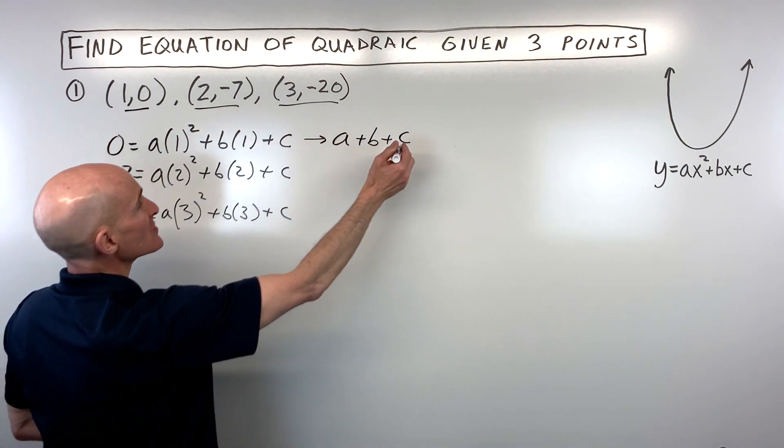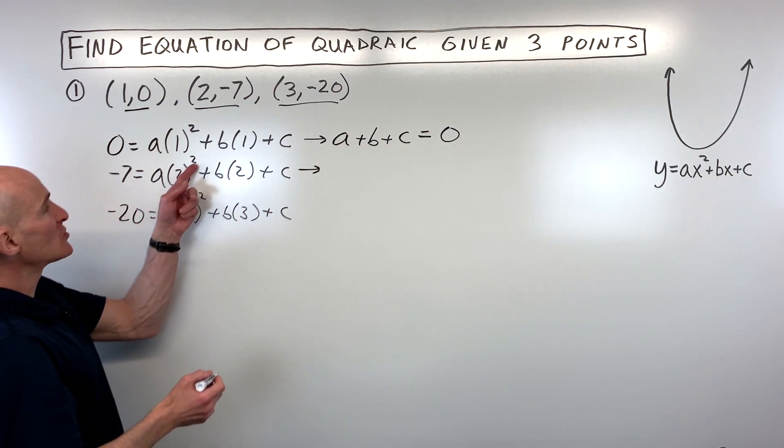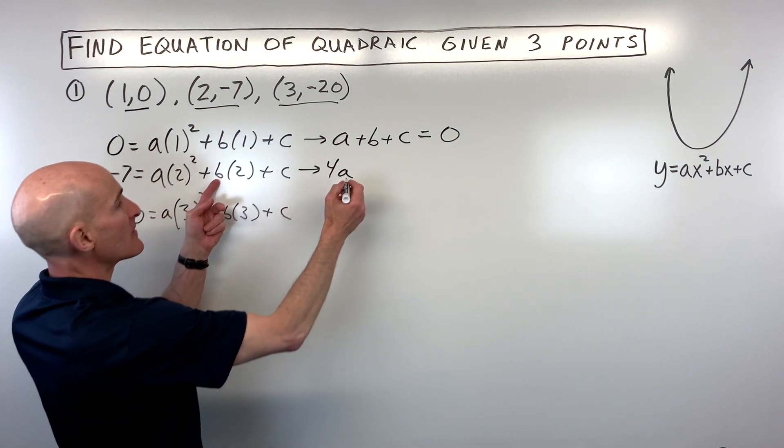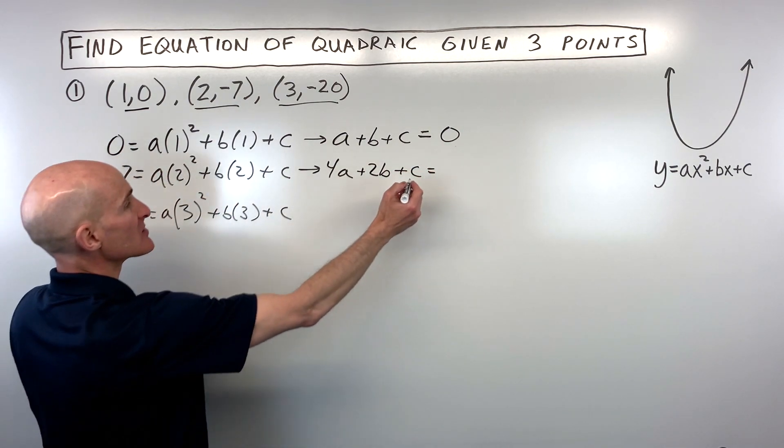And I'm just going to flip this equation. So this is all equal to zero. Now same thing with the second equation. Two squared is four times a is going to give us 4a. Two times b is going to give us 2b plus c is equal to negative seven.